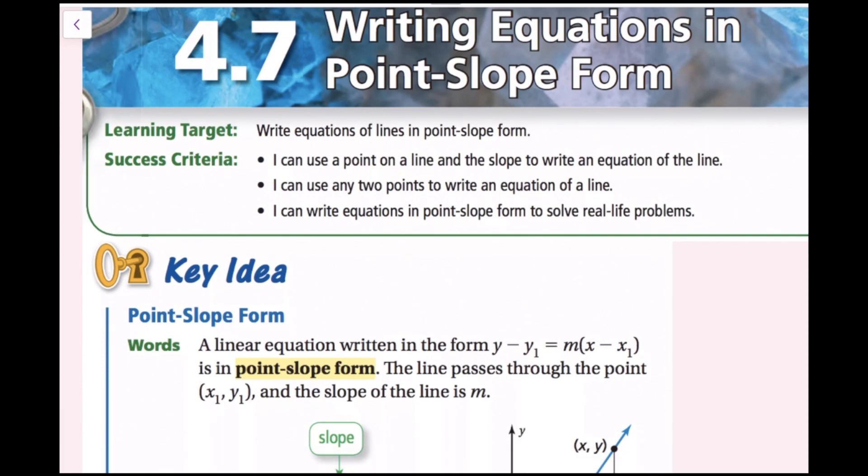In this lesson we're going to be writing equations of lines in point-slope form. The success criteria is: I can use a point on a line and the slope to write an equation of the line, I can use any two points to write an equation of the line, and I can write equations in point-slope form to solve real-life problems.